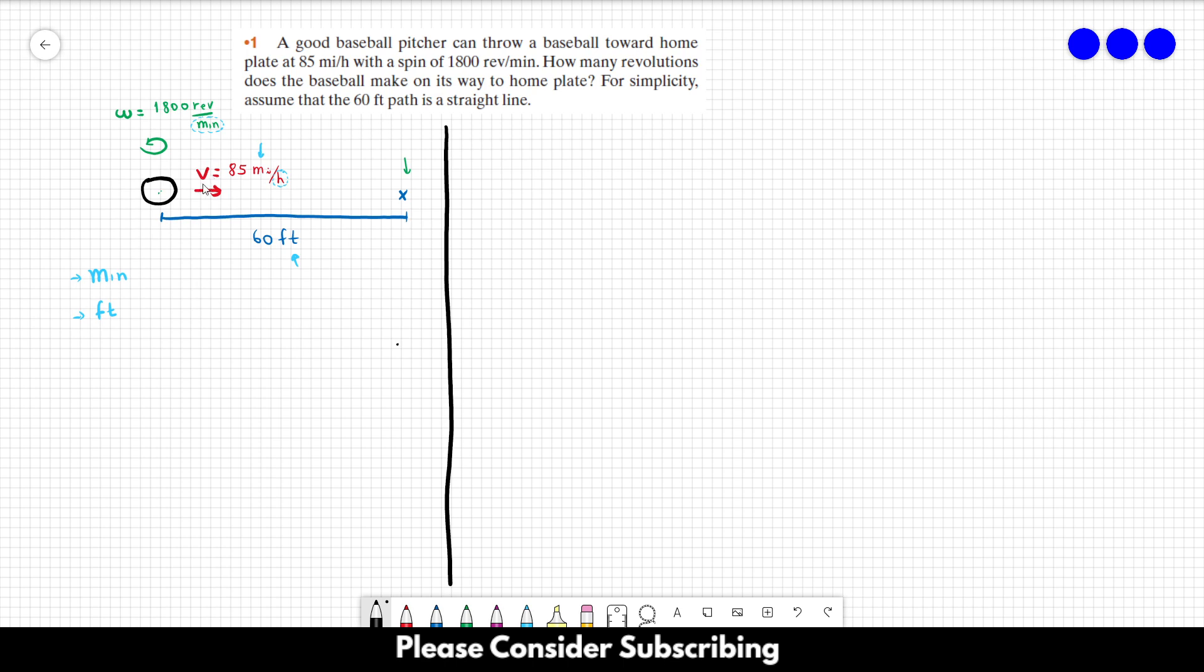Okay, so let's convert this velocity into feet per minute. So the velocity is equal to 85 miles per hour. However, one mile is equal to 5,280 feet is equal to 60 minutes.